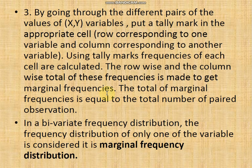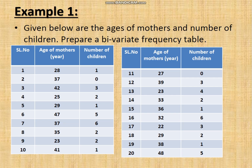Those frequencies are called marginal frequencies. In bivariate data, frequencies belonging to one variable are called marginal frequencies. The total marginal frequencies equals the total number of paired observations. Both the total of x and the total of y will be the same. The frequency distribution of either variable x or y is called the marginal frequency distribution.